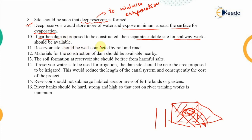The reservoir site should be well connected by rail or road to allow regular inspection. Construction materials for the dam should be available nearby, which is valid for any kind of construction. Also, the soil formation at the reservoir site should be free from harmful salts, otherwise those salts may react with the concrete or other materials used for the construction of the reservoir.